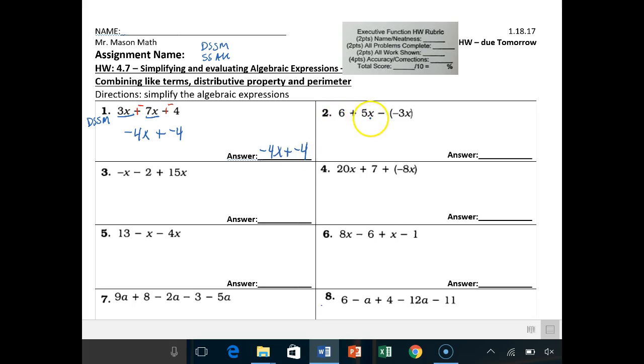Look at number 2 here. Keep, change, change. It would turn into 5x plus positive 3, right? Adding the opposite, it's already a negative. The opposite of that is positive. So that should be a pretty easy problem there.